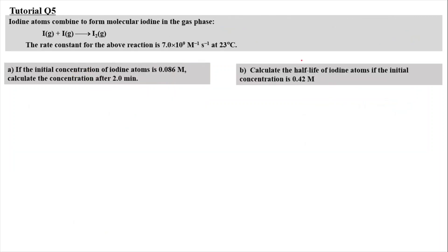Moving on to Question 5, iodine atoms combine to form molecular iodine in the gas phase: I(g) + I(g) → I₂(g). The rate constant is 7 times 10 to the power of 9 per molar per second at 23 degrees Celsius. For part A, if the initial concentration of iodine is 0.086 molar, calculate the concentration after 2 minutes. But how do we know whether it is a first-order, second-order, or zero-order reaction?